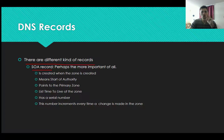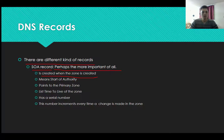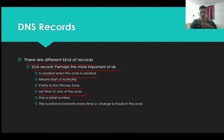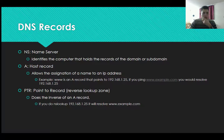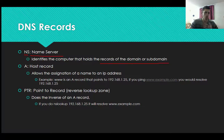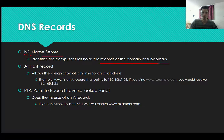DNS records — there are different kinds. The first is the SOA record, which stands for Start of Authority, and it is perhaps the most important. It is created automatically when the zone is created. It points to the primary zone, has a time-to-live for the zone, and has a serial number that identifies the zone — this number increments every time a change is made to the zone. Then we have the NS (Name Server) record, which identifies the computer that holds the records of the domain or subdomain — for example, server1 or NS1.